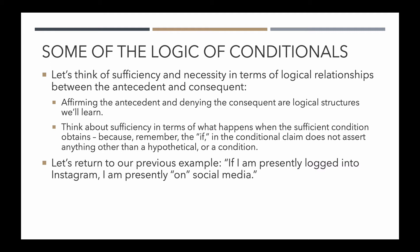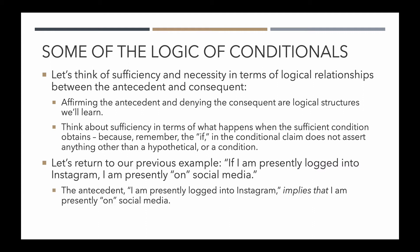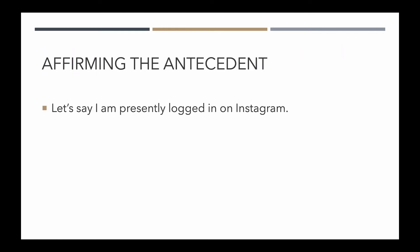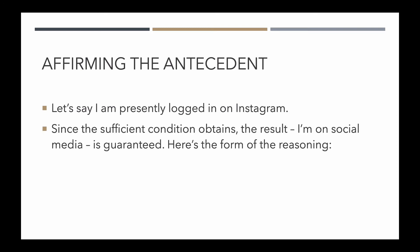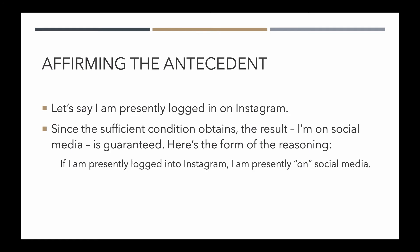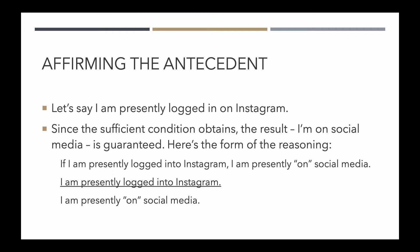When we affirm the antecedent, we're saying that the claimed sufficient condition is in fact the case. Returning to our example: 'If I am presently logged into Instagram, I am presently on social media.' The antecedent — I am presently logged into Instagram — implies I am presently on social media. So the question is: does the sufficient condition obtain? If we say yes — I am presently logged into Instagram — then since the sufficient condition obtains, the result, being on social media, is guaranteed. The form of the reasoning is: if I'm logged into Instagram, I'm on social media; I am logged into Instagram; therefore, I am on social media. Affirming the antecedent, affirming that the sufficient condition obtains, is what guarantees the consequent.